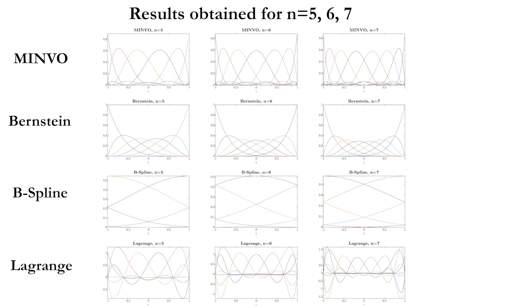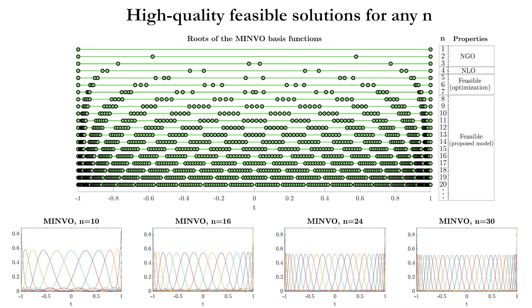These are the results for n equals 5, 6, and 7. Using these previous results, we then propose a model to easily produce high-quality feasible solutions for any degree n.